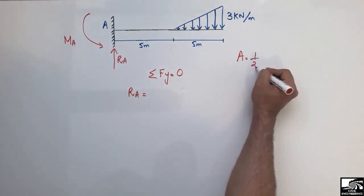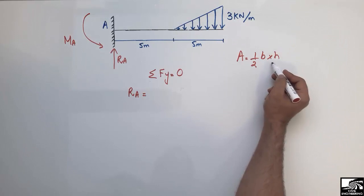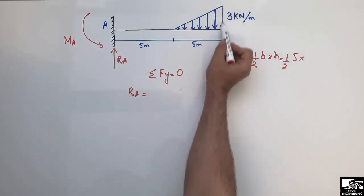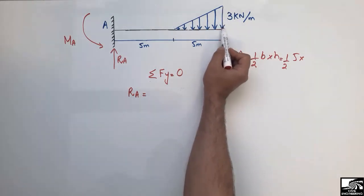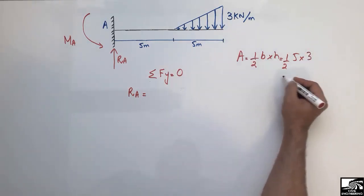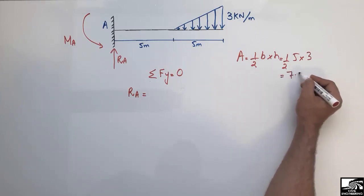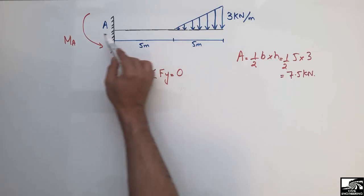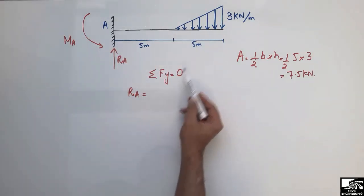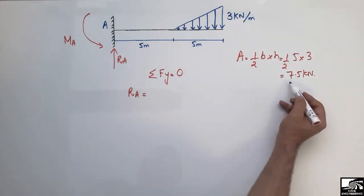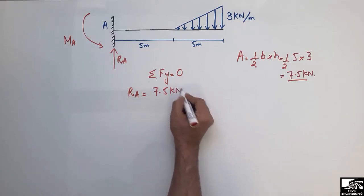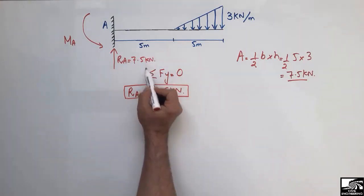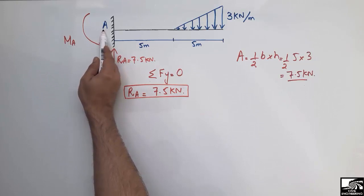The area of the triangle is found using: half × base × height. The base is 5 meters and the height is 3 kN/m (the maximum load intensity). So the area = ½ × 5 × 3 = 7.5 kN. This area represents the total load acting on the beam, so RA = 7.5 kN.